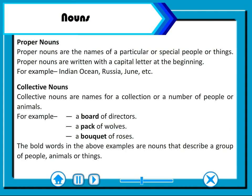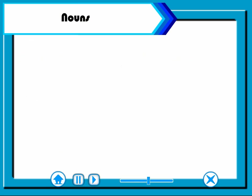Collective nouns are names for a collection or a number of people or animals. For example: a board of directors, a pack of wolves, a bouquet of roses. The bold words in the above examples are nouns that describe a group of people, animals or things.